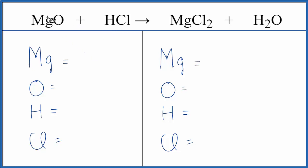Let's count the atoms up on each side of the equation. We have one magnesium, one oxygen, one hydrogen, and one chlorine.